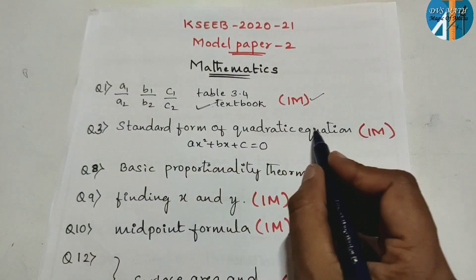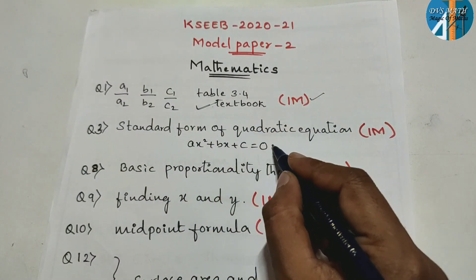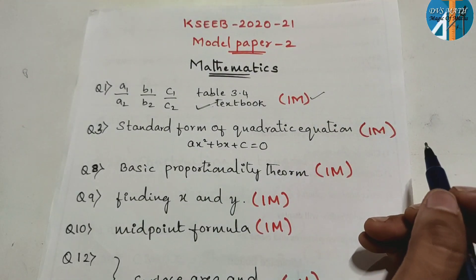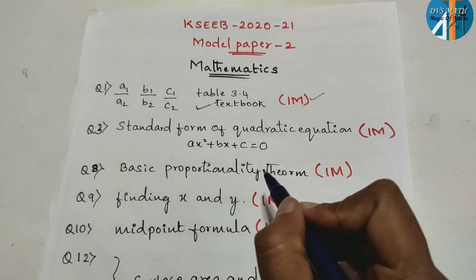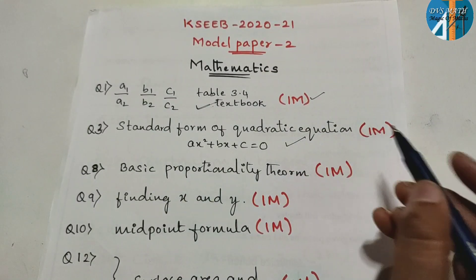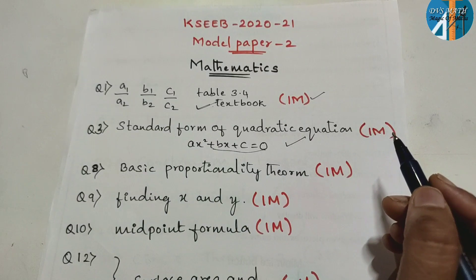Next, standard form of quadratic equation. It is MCQ. But in paper, you will write the standard form of quadratic equation, 1 mark. So MCQ is also made in 1 mark. Same pattern is made in the same pattern. Just it is a standard form note.